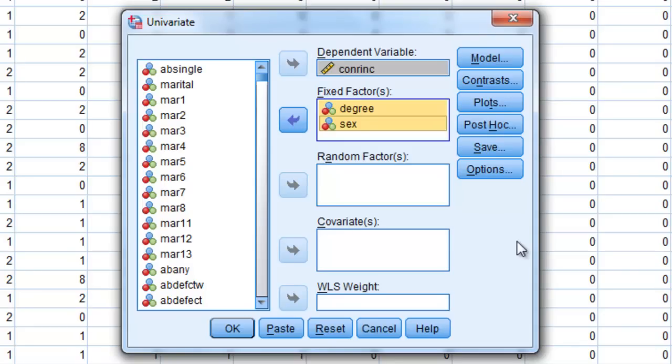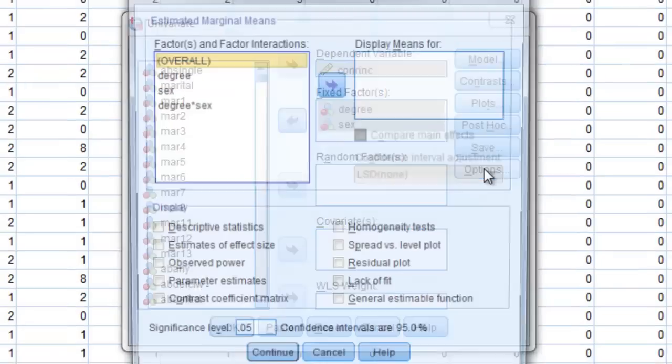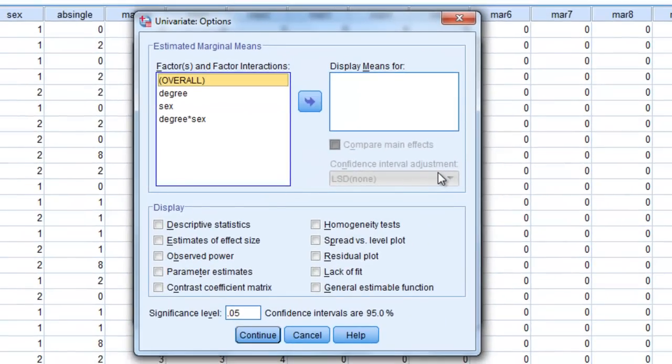There are a few options that you may want to select. So I will click on Options. And I get this Univariate Options pop-up screen. And I always want my descriptive statistics for each of my groups. So I'll select that.